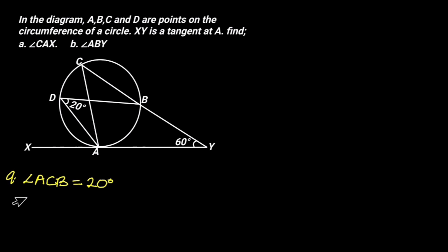Considering triangle ACY, angle CAX is equal to 20 degrees plus 60 degrees. Reason: exterior angle of triangle ACY. Therefore, angle CAX is equal to 80 degrees.